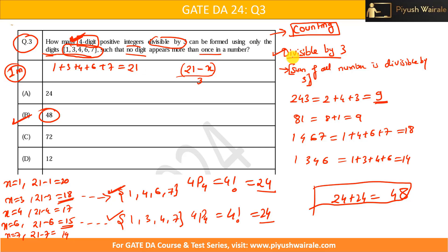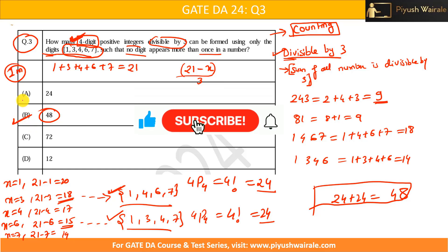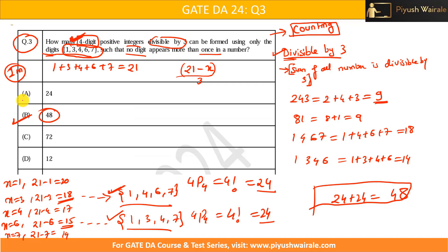You need to know the divisibility rule for three and think in that direction to find valid combinations of four digits from the five given digits. Here we got two combinations — sums of 18 and 15 — both divisible by three. Then we count the permutations: 4 factorial for each, giving 48 total. The correct answer is option B. I'll add similar questions in the test — please try to solve them. That's it for this video, thank you.